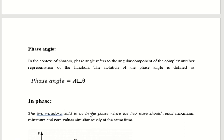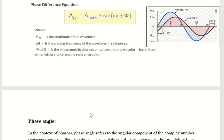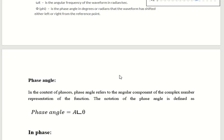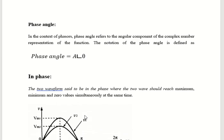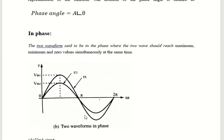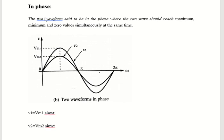This can be written in the form of a phase angle. Here the magnitude is V_max and the phase angle is φ, so we can write this as amplitude at angle θ. This is the representation of the phase angle.